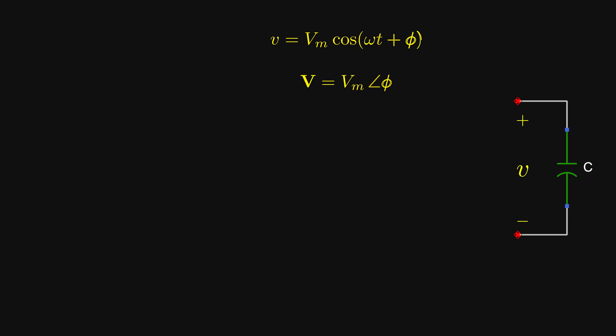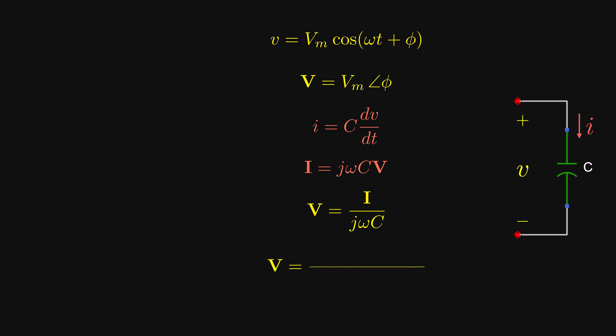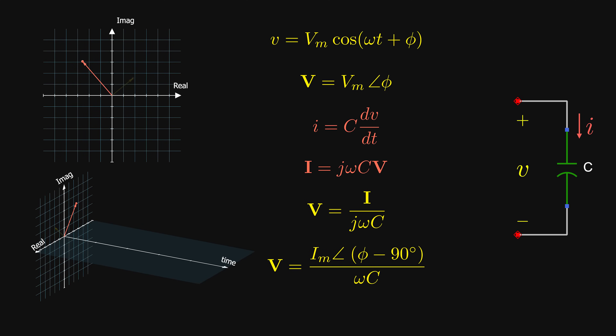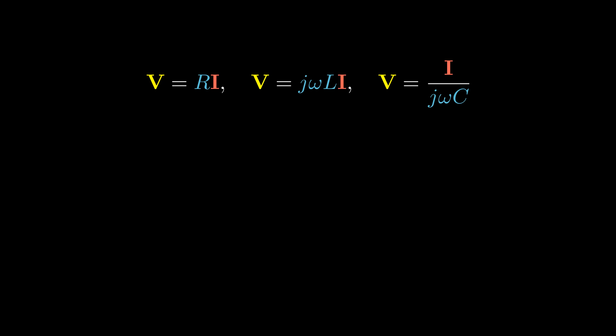For the capacitor, assuming the voltage across it is sinusoidal, the current drawn by it is governed by C dV/dt, where C is the capacitance. Using the derivative property in the phasor domain, v equals i over j omega C. Since minus j means minus 90 degrees of phase shift, for the case of capacitors, the voltage lags the current by 90 degrees. Now we know the voltage-current relationship in time and phasor domains for resistors, inductors, and capacitors under sinusoidal excitation. That leads us to the concept of impedance.